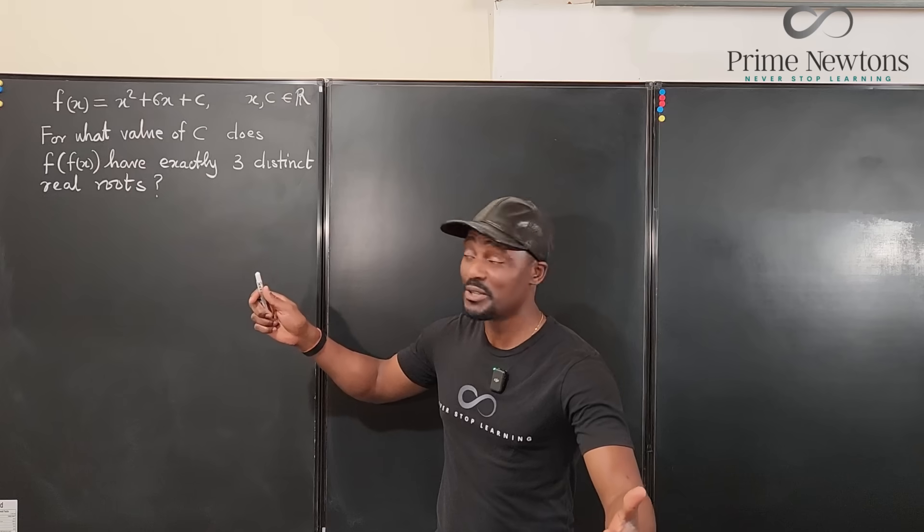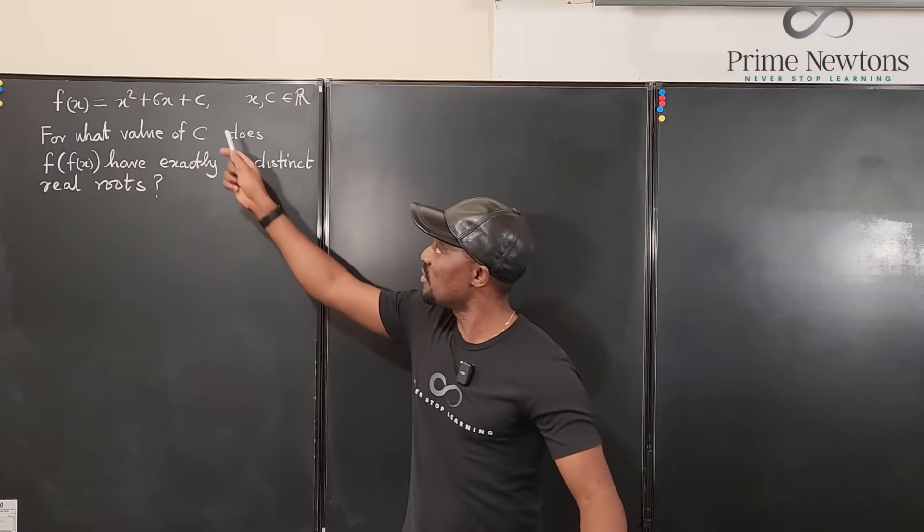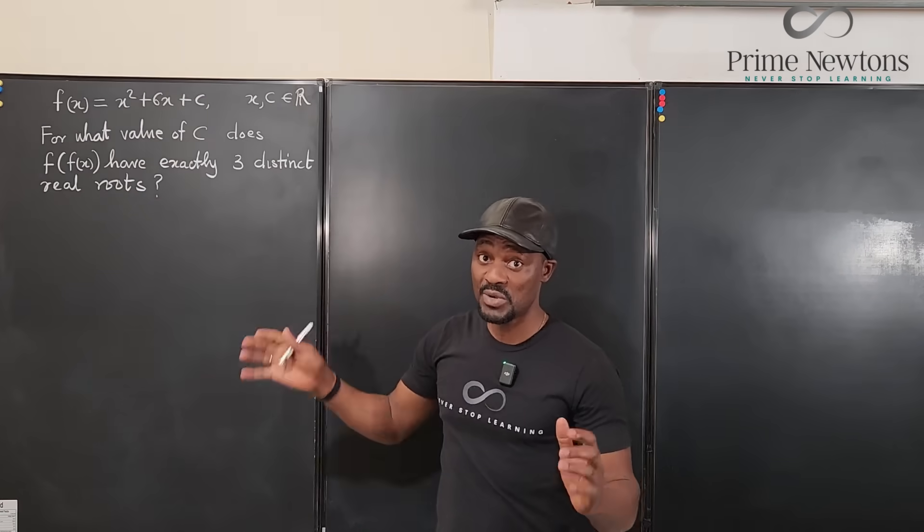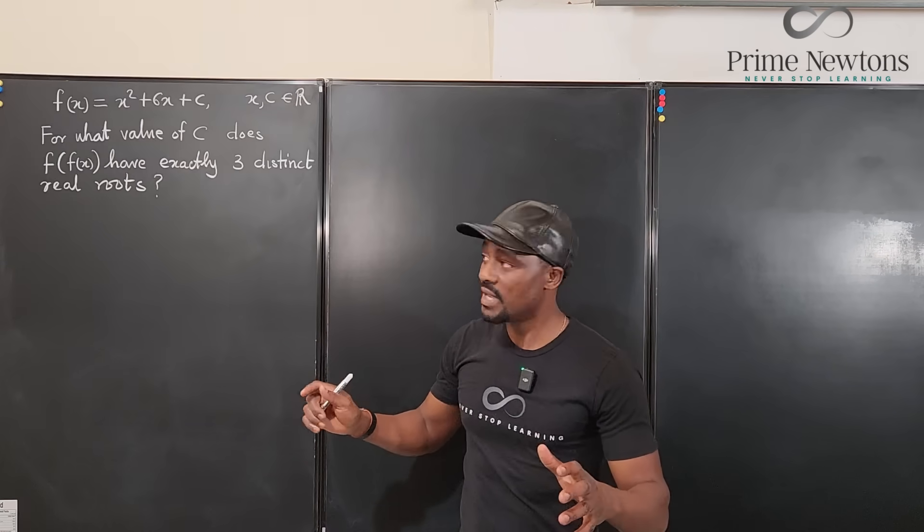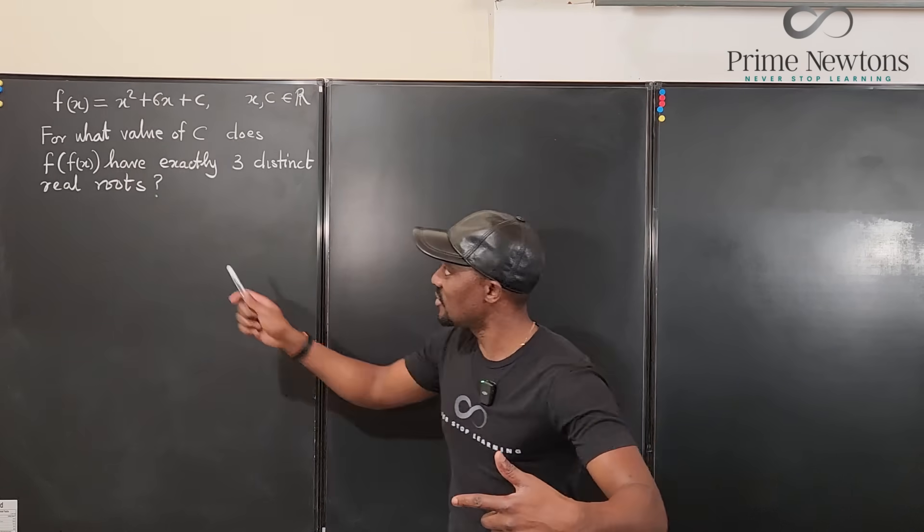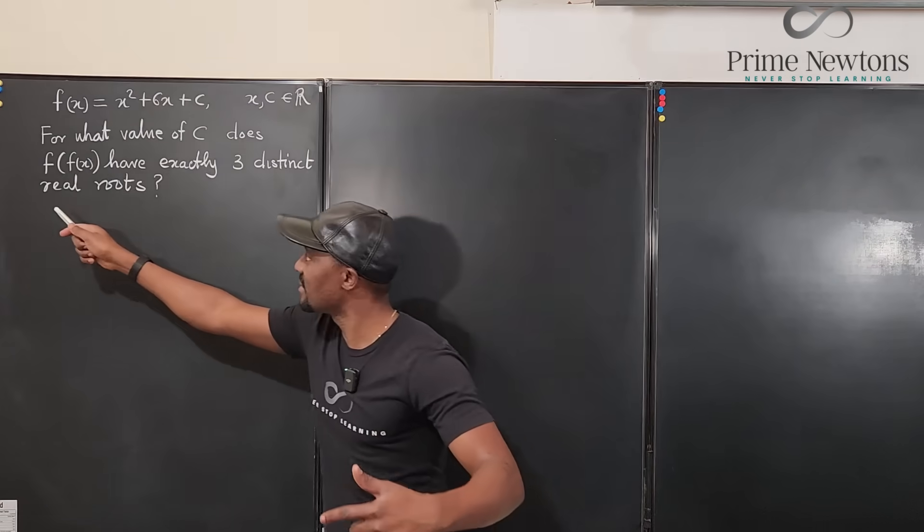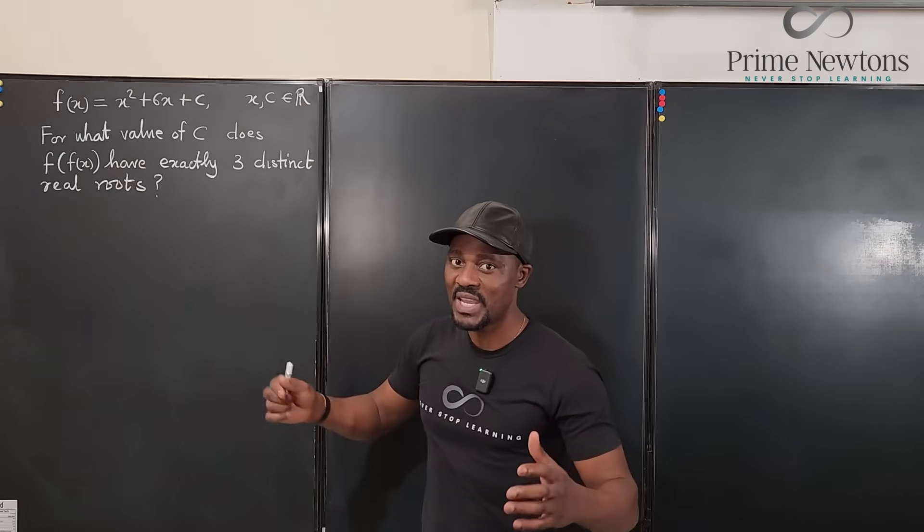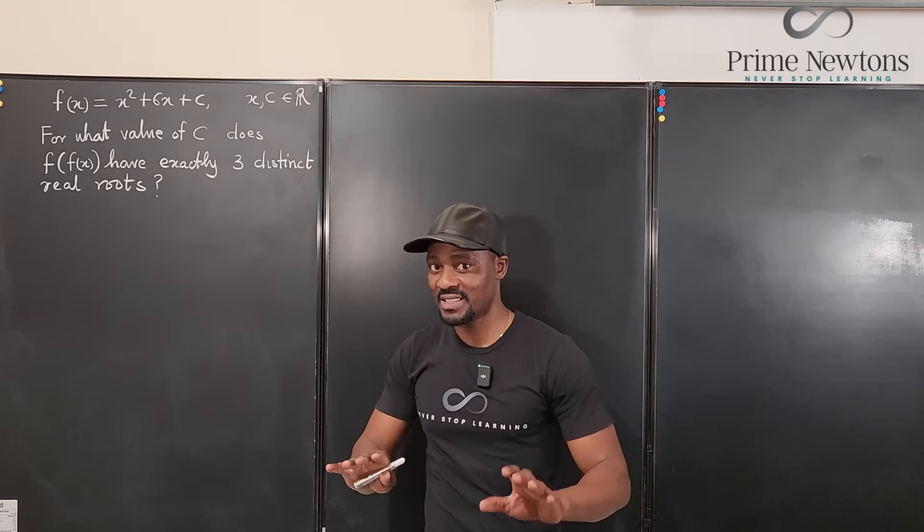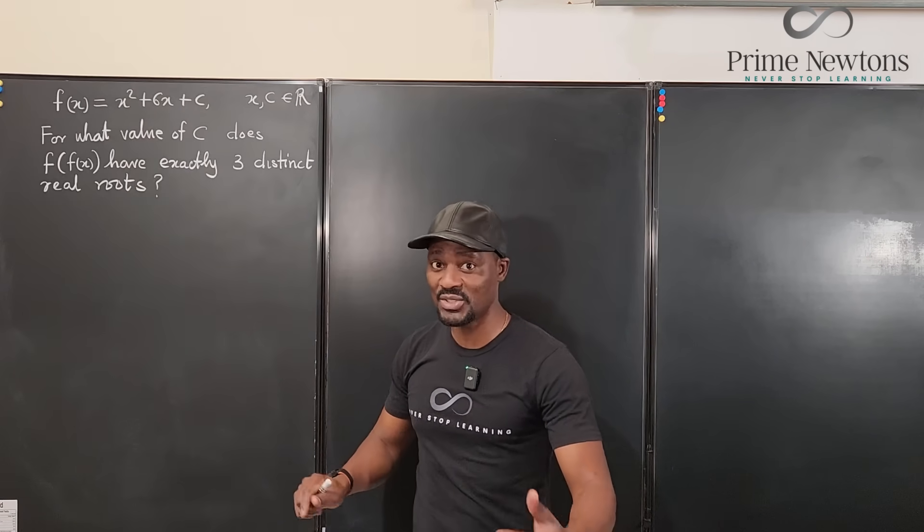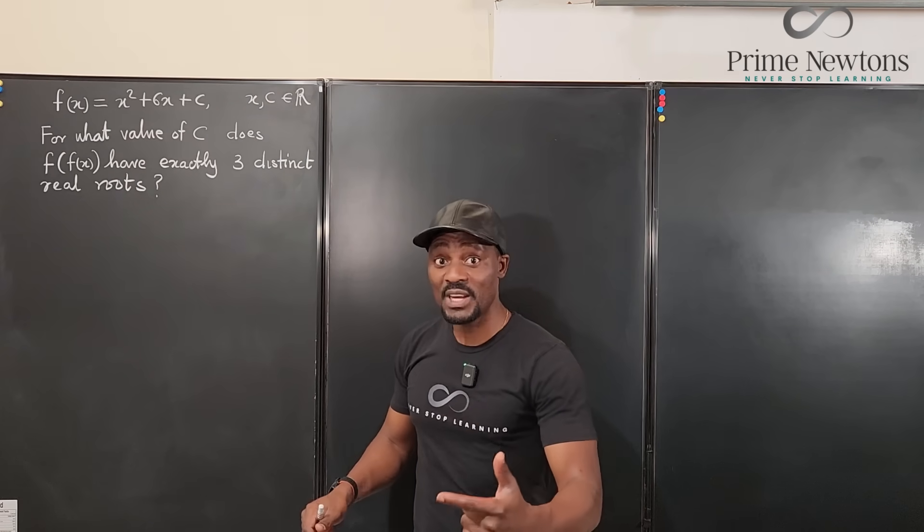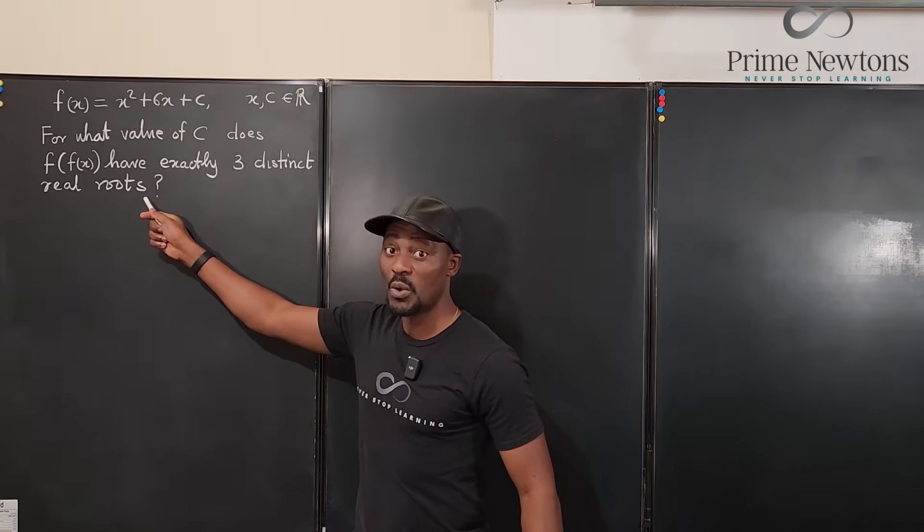And what we're supposed to do is to find the value of c. Now c and x must be real numbers. And the condition is that when you compose f by itself, that is you find f of f of x, we're going to get three distinct real roots. Now that is where the test is because the composition is not the problem. It is you being able to find what the value of c would be for this condition to hold.